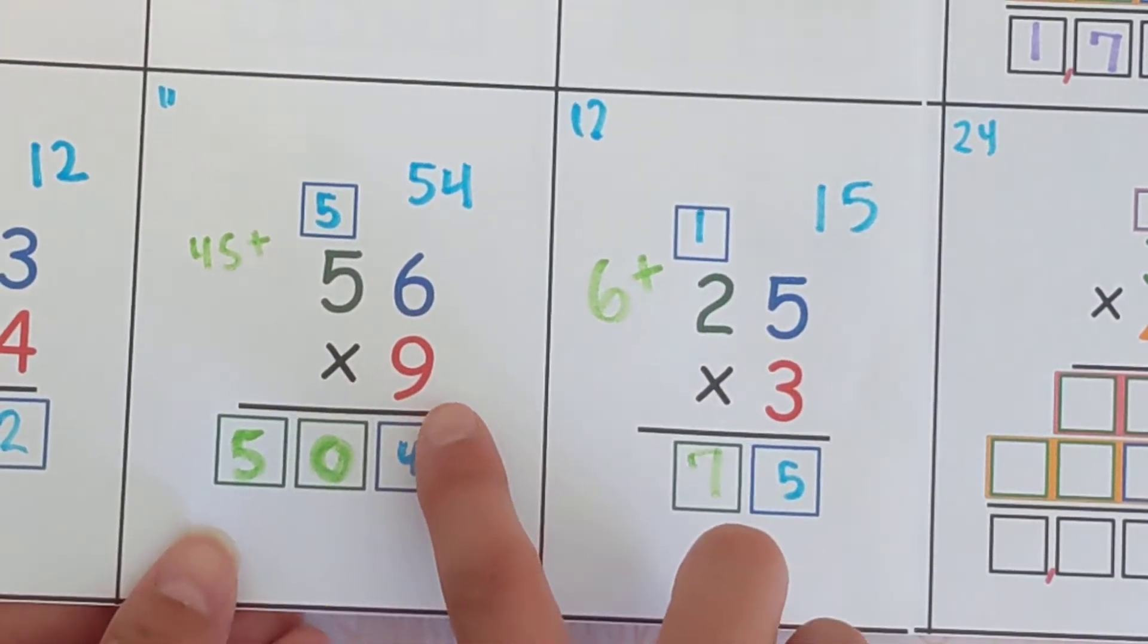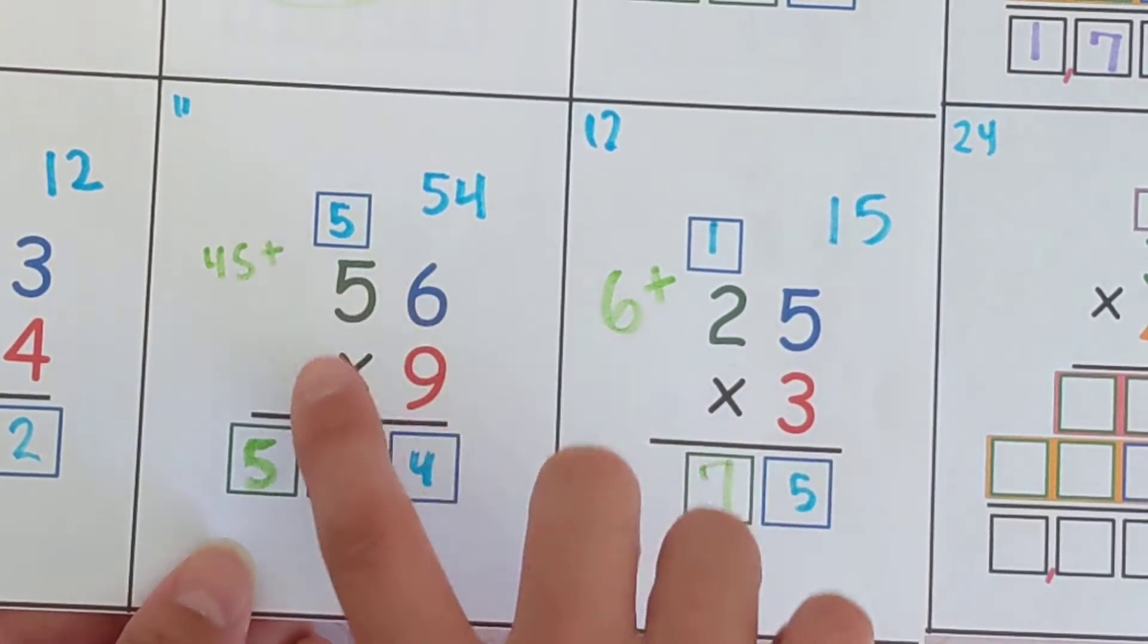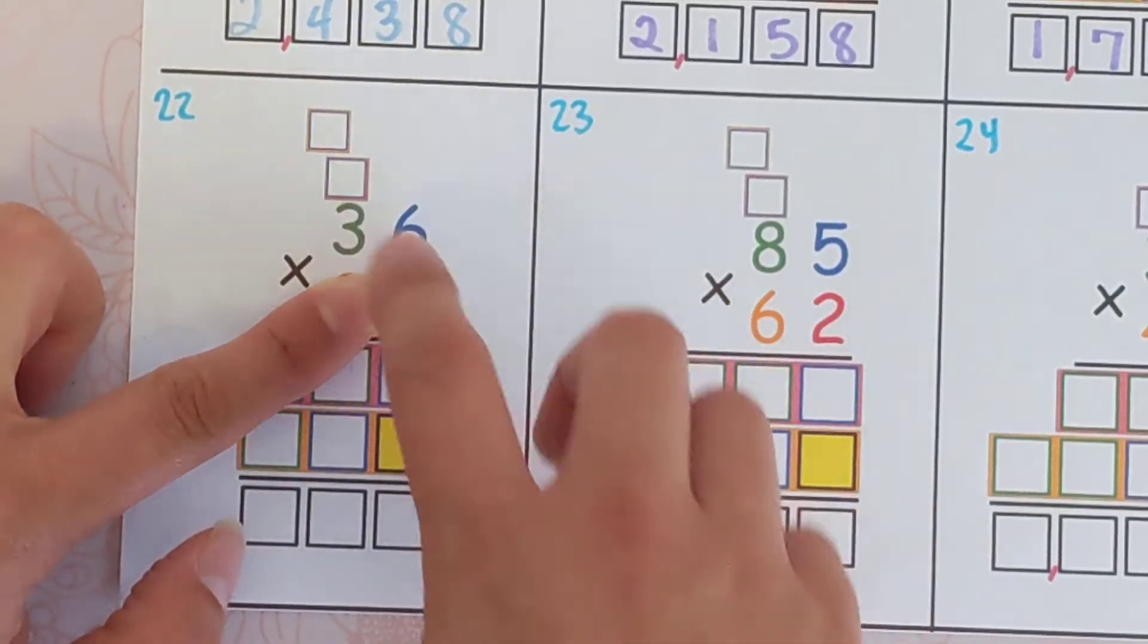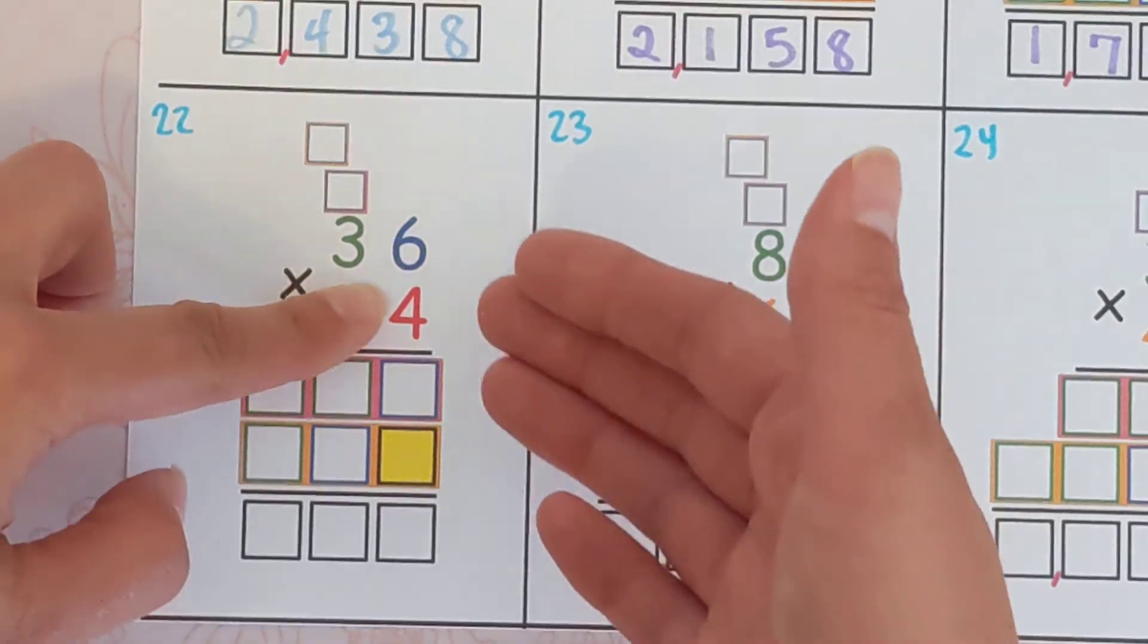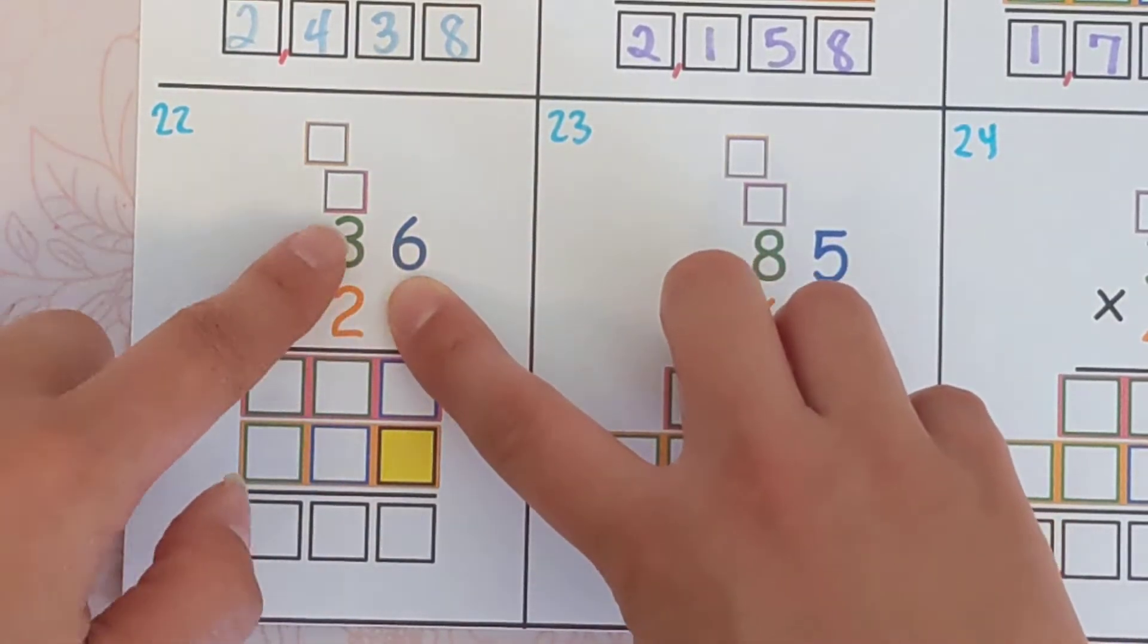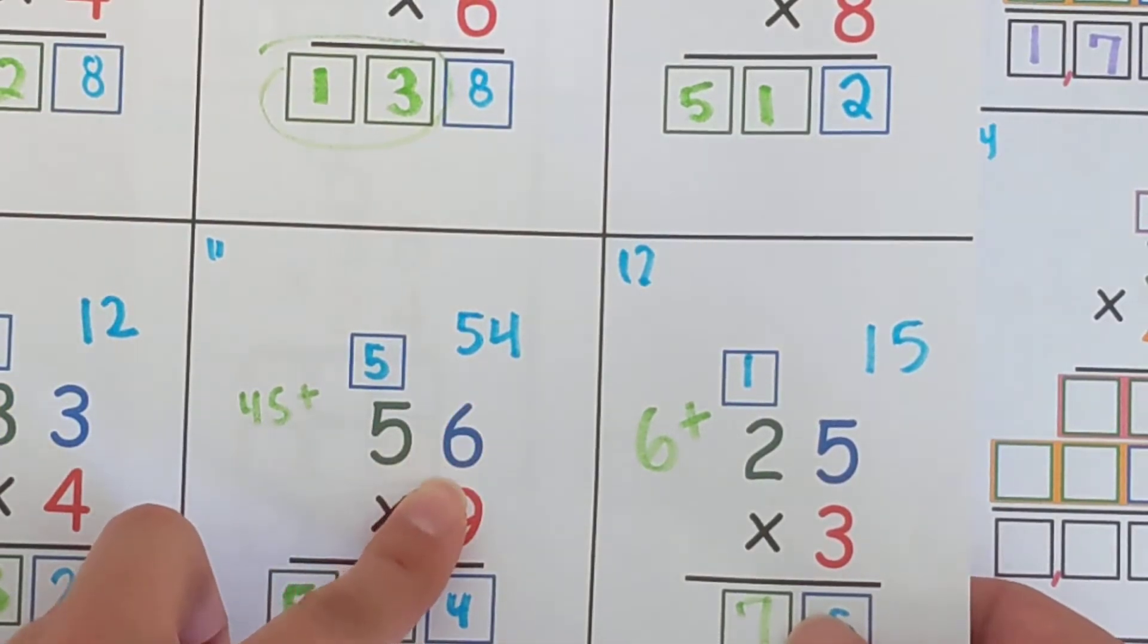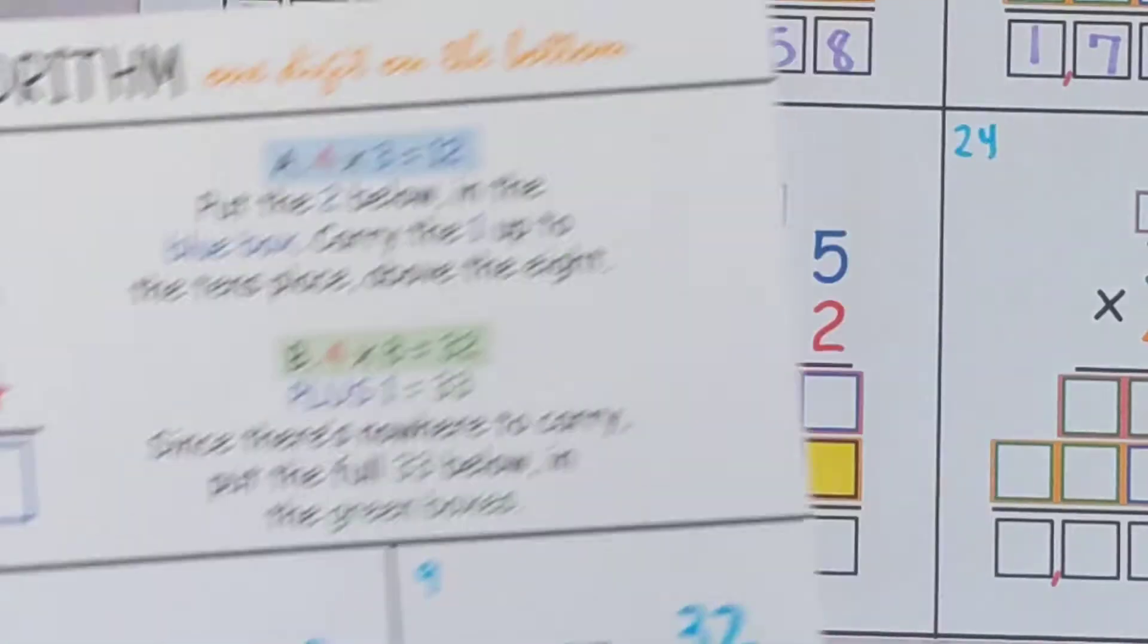This is the same thing, you're just doing it two times. So for example, for this one we did nine times six and nine times five. You're still going to do that here, four times six, four times three, and then you're just going to go down a row and do it one more time.